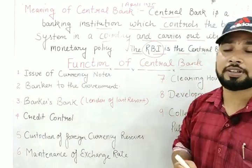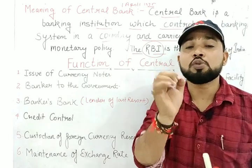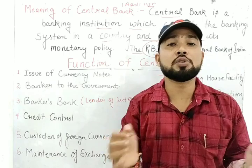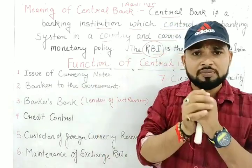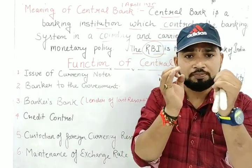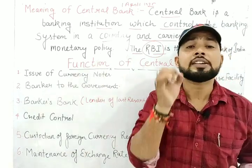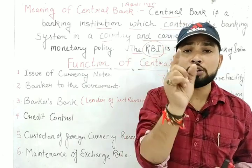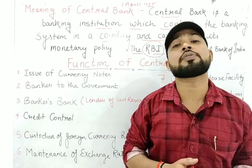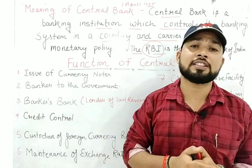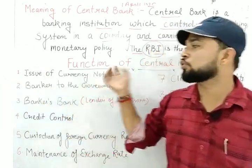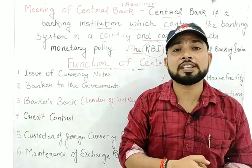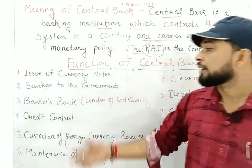Now the most important point — the functions of central bank. The first function is the issue of currency notes. Currency notes are issued by RBI. RBI has monopoly authority over currency note issuance. One rupee note and coins are issued by the Finance Ministry of India, but all other currency notes are issued by RBI. The signature on currency notes is that of the RBI Governor.